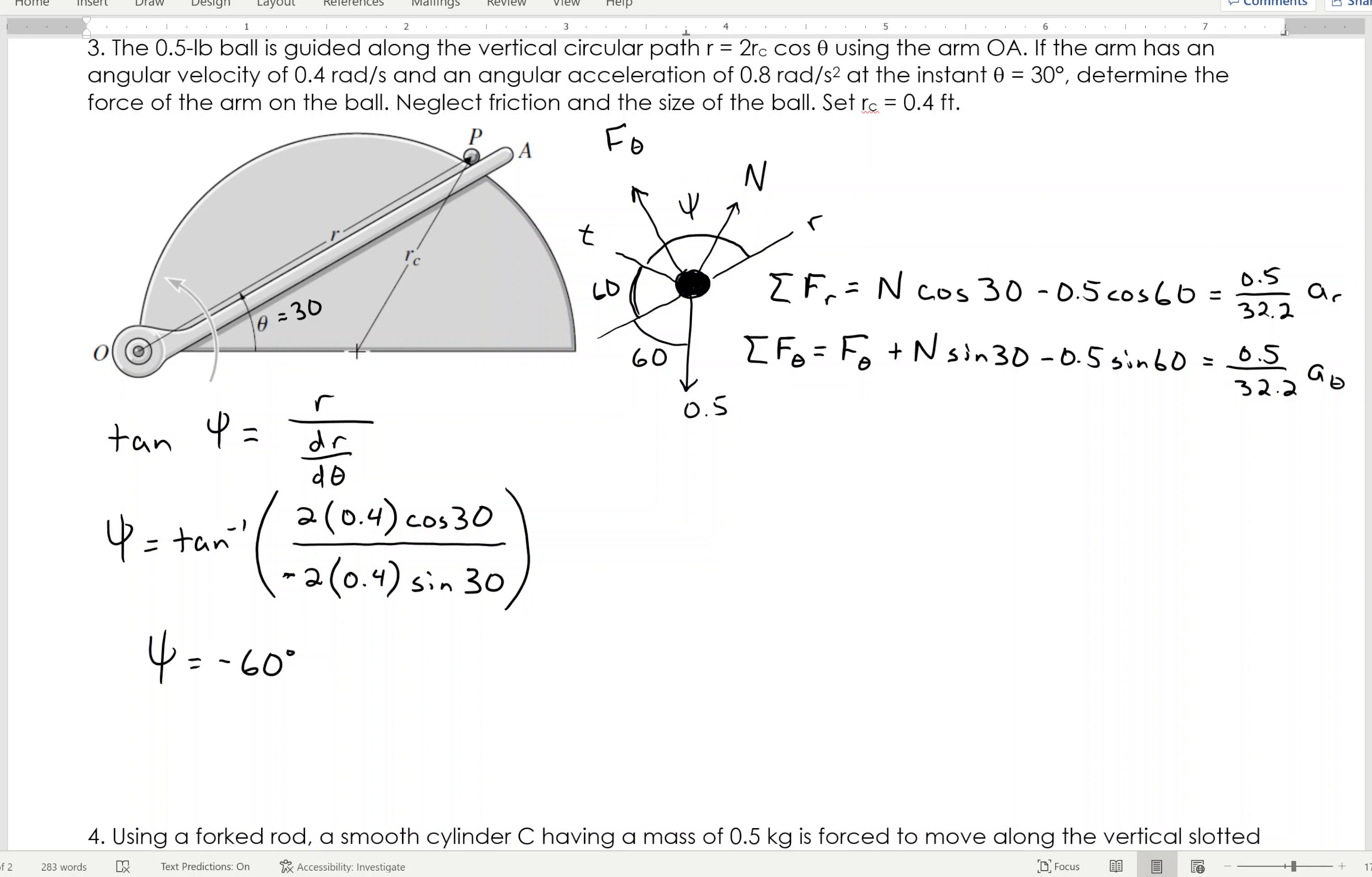Now, I need to now go through and figure out, well, what is R, R dot, I need to find AR and A theta, so we'll start by going, well, R is 2 times 0.4 times the cosine of theta.